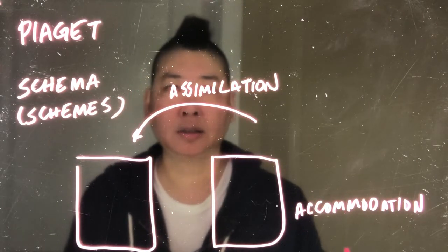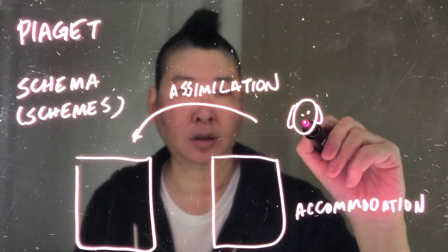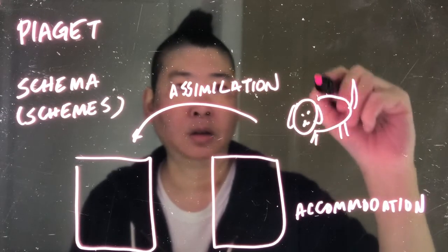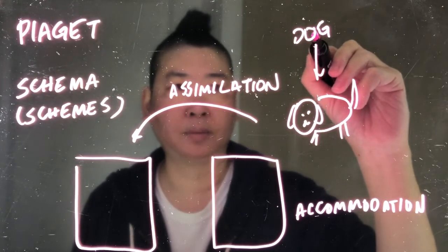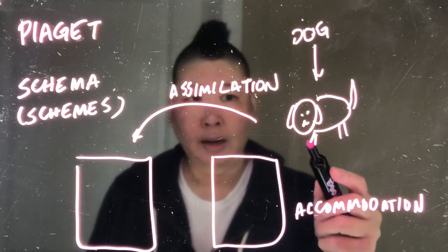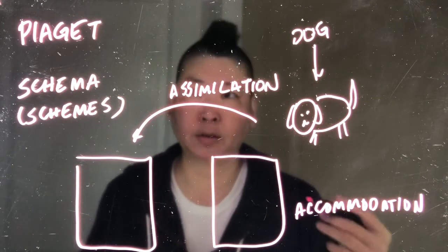Now, let's say, for example, you encounter or you grow up in a household full of these. This is supposed to be a dog, in case you can't tell. You're going to have a schema for dog, four-legged furry animal with a tail.